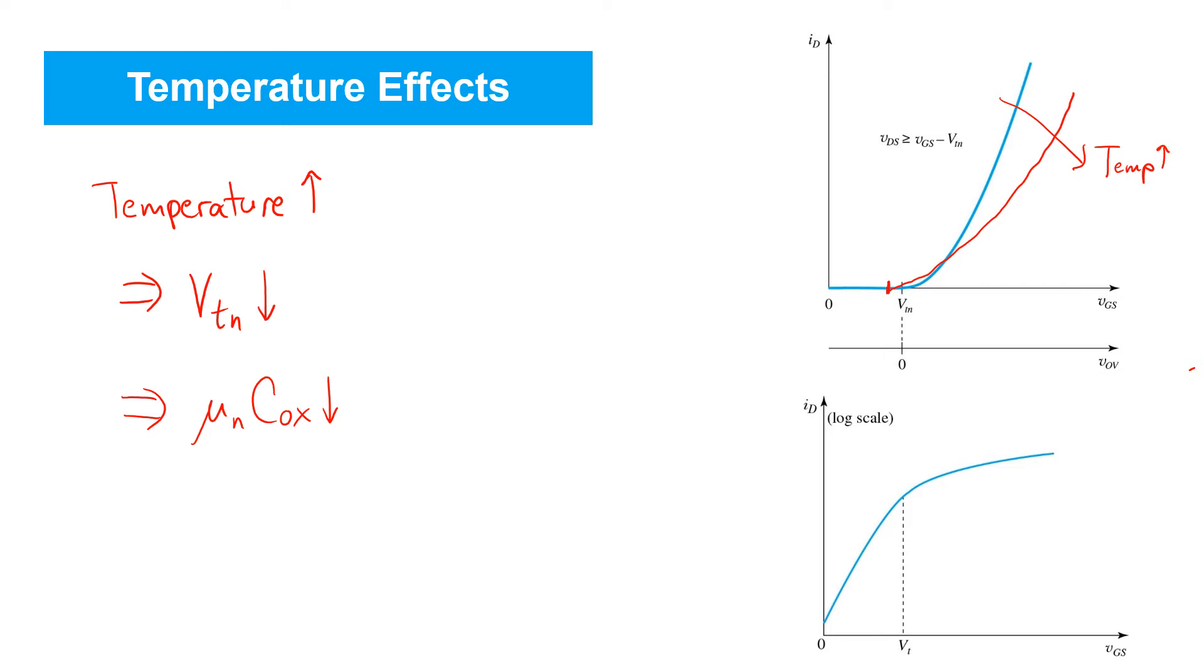However, if we think about what happens in the subthreshold region, although the decline in mu N C ox means that this part of the curve might come down, the threshold voltage moving over to the left has a more significant effect. So, in fact, as temperature goes up, subthreshold leakage increases.